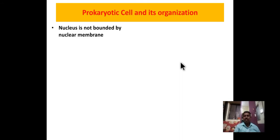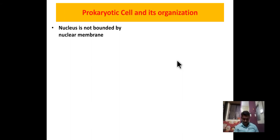Now we are going to learn the prokaryotic cell and its organization. The nucleus is a very important criterion for distinguishing the prokaryotic cell from the eukaryotic cell. The nucleus is not bounded by a nuclear membrane in the prokaryotic cell — the cells are without a true or well-organized nucleus. Prokaryotic cells are represented by bacteria, blue-green algae, and mycoplasma.